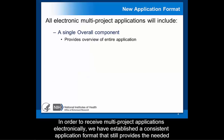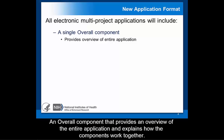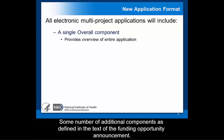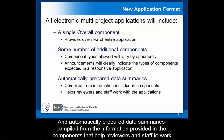In order to receive multi-project applications electronically, NIH has established a consistent application format that still provides the needed flexibility to meet opportunity-specific needs. Every multi-project application includes an overall component that provides an overview for the entire application and explains how the components work together, some number of additional components as defined in the Funding Opportunity Announcement, and automatically prepared data summaries compiled from the information provided in the components.